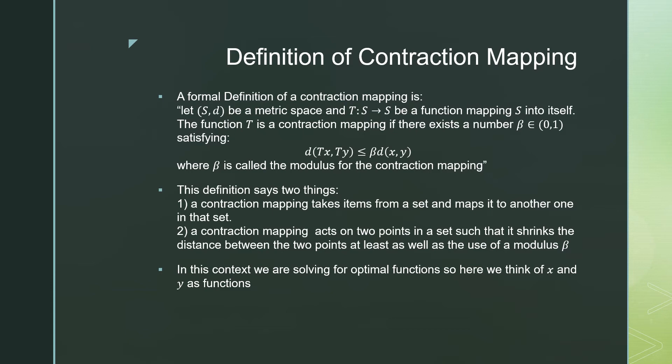That is if we have our distance function between T of X and T of Y, meaning that we have T acting on X and T acting on Y, that's going to be at least as good as applying this beta to this distance function, which shrinks it, where beta is called the modulus of our contraction mapping. So this definition says two things. The first one is that a contraction mapping takes items from one set and maps it to another set. And two is that a contraction mapping acts on two points in a set such that it shrinks the distance between the two points of that set, at least as well as the use of a modulus beta.